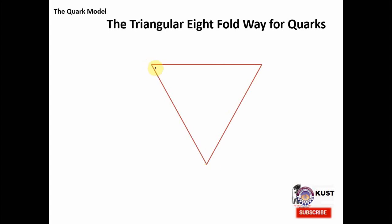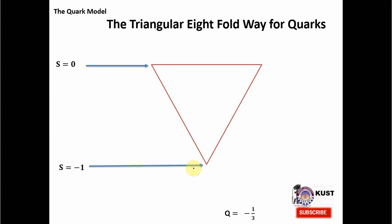Before that, we have to assign two properties to every corner: strangeness and charge. Let's assign S = 0 to the top-left corner, and the second upper corner will also get S = 0. The bottom corner gets S = −1. For charge, we assign −1/3 to this corner. Note that the charge is fractional — quarks are the only fundamental particles which have fractional charge. But their charges inside baryons or mesons add up, and the visible charge is actually integral. The second corner gets charge = +2/3.